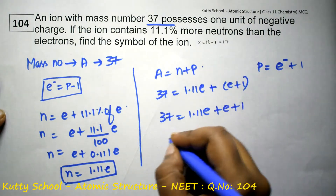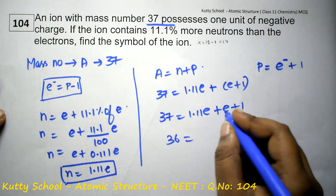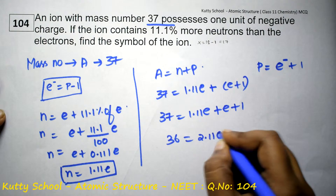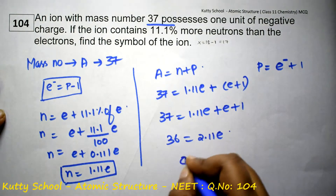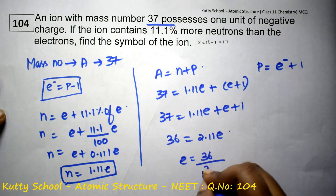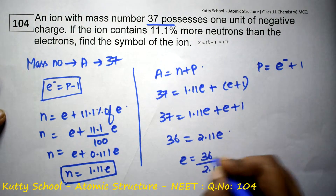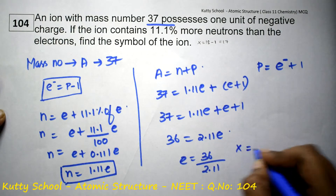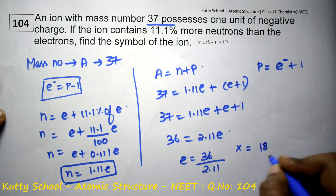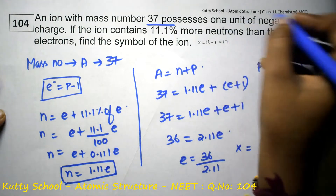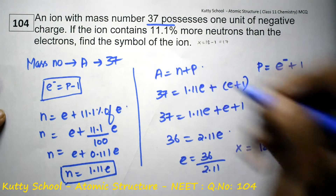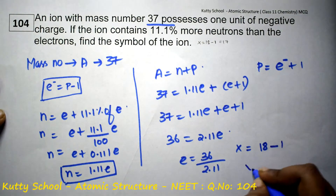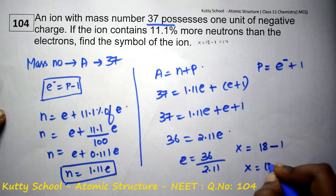So, 36 equals 2.11 electron. Therefore, electron equals 36 divided by 2.11, which calculates to 18. Since there is a negative charge of minus 1, proton equals electron minus 1, so proton equals 17.